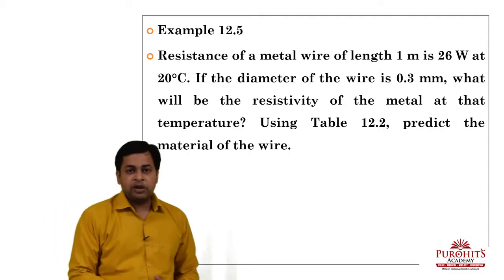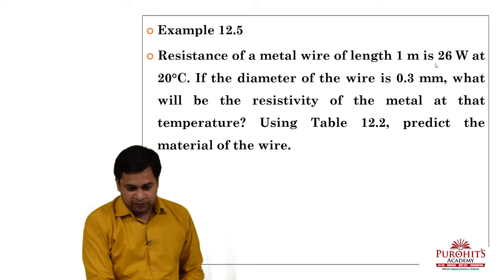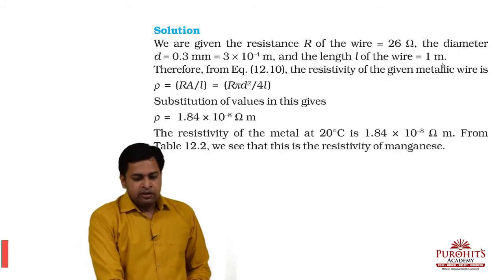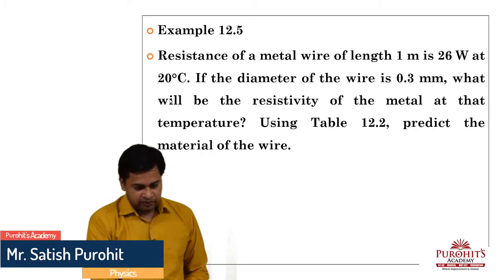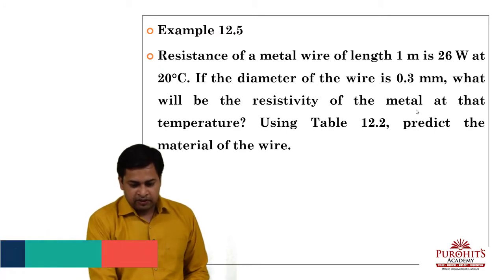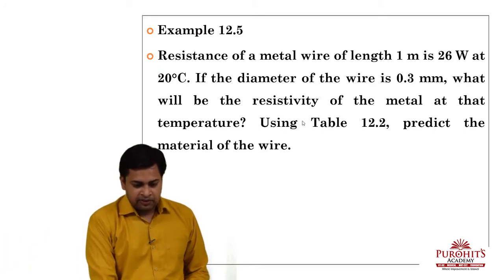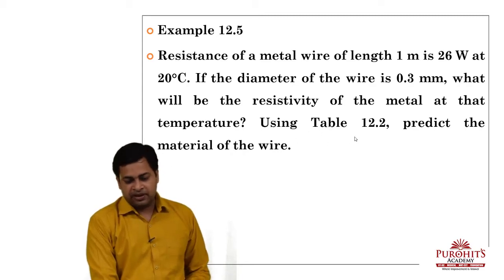Welcome students. Example 12.5: The resistance of a metal wire of length 1 meter is 26 Ω. Length and resistance are given at 20°C, and diameter is given as 0.3 millimeter. What will be the resistivity of the metal at this temperature? We need to find the resistivity value.